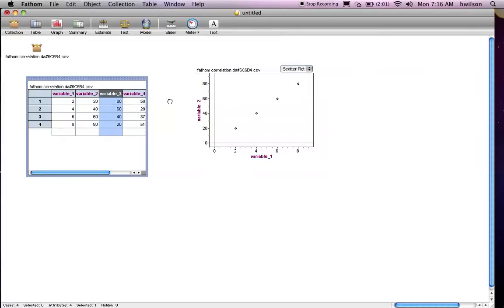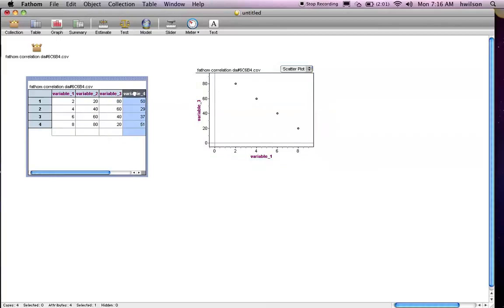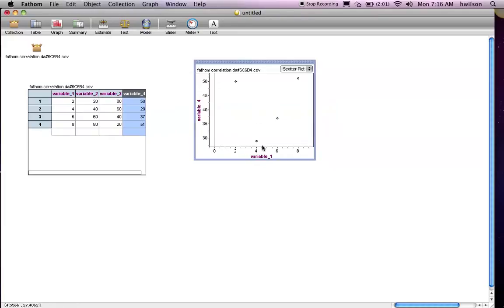Now, you can have a negative correlation. And when you increase variable 1, variable 3 decreases. So this is a negative correlation. And also, perhaps there's no correlation. As you can see, there's no trend between variable 1 and variable 4. It looks pretty scattered.